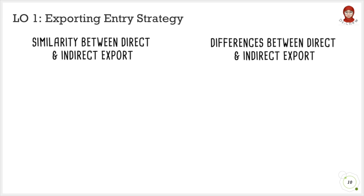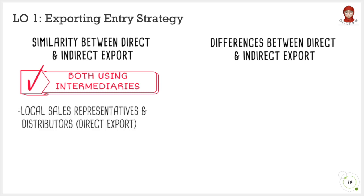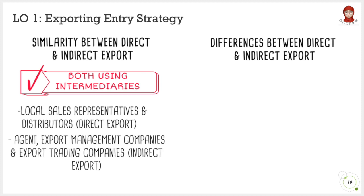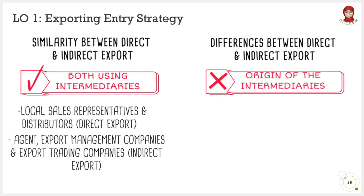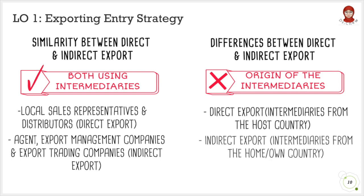Both direct and indirect export have some similarities and differences. In terms of similarities, both are using intermediaries to get their products into a foreign market. Direct export uses local sales representatives and distributors, while indirect export uses agents, export management companies, or export trading companies. The difference is in terms of the origin of the intermediaries — direct export uses intermediaries based in the host or foreign countries, whereas indirect export uses intermediaries from their own home country.